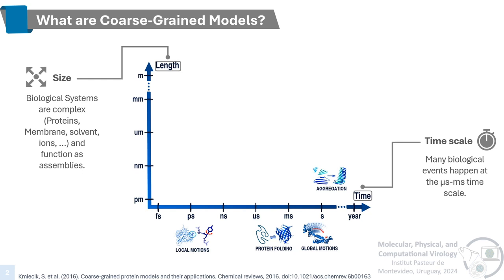When we talk about simulating biological systems, we need to keep in mind two factors: the length and the time scale. When we talk about the length, we are talking about the size of the system we want to simulate. If you want to keep it as close as possible to the real biological system, we need to add components to it, such as proteins, membranes, solvents and ions, and this increases the number of particles we need to simulate.